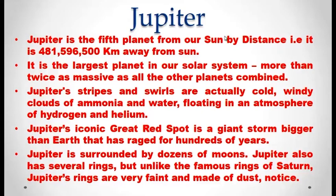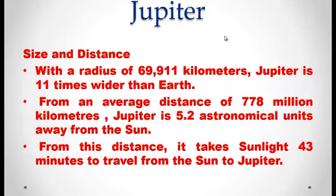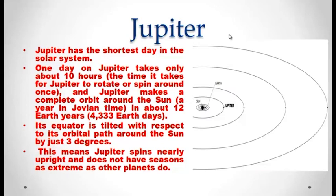Jupiter's rings are very faint and made of dust and other particles. The radius of Jupiter is 69,911 kilometers — Jupiter is 11 times wider than Earth. From an average distance of 778 million kilometers, Jupiter is 5.2 astronomical units away from the sun. Jupiter has the shortest day among the planets in the solar system. One day on Jupiter takes just about 10 hours — the time taken by Jupiter to rotate and spin around once. Jupiter makes a complete orbit around the sun in about 12 Earth years.